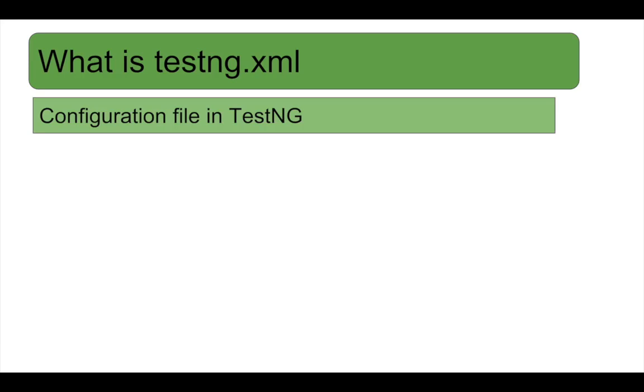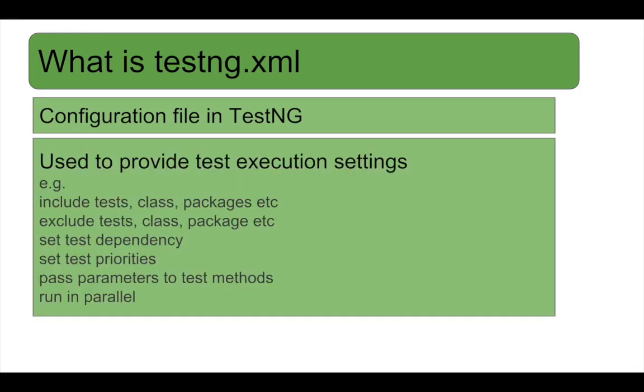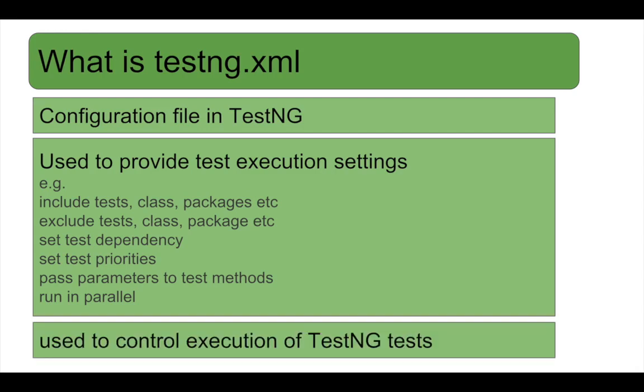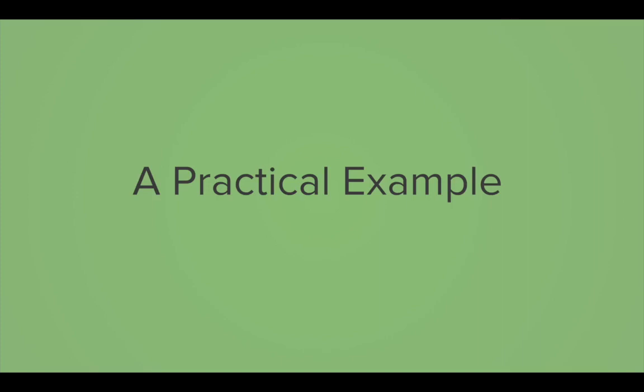If you are using TestNG as a testing framework in your project, then testng.xml is a configuration file in TestNG. You can use this file to set execution settings like what test classes and packages you want to include in your runs, what you want to exclude, set some dependencies, priorities, and also set the parallel mode. Basically, testng.xml is used to control the execution of TestNG tests.